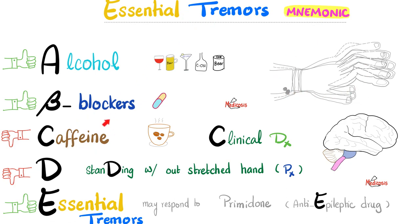How can we diagnose essential tremor? Well, it's a clinical diagnosis, based on the patient's history, triggering factors, and relieving factors. On physical exam, ask the patient to stand up with hands stretched out — you'll find that the tremor gets worse. That's why here's a thumbs down.